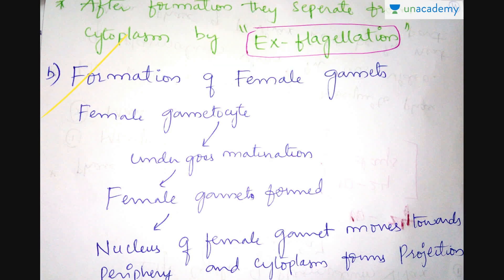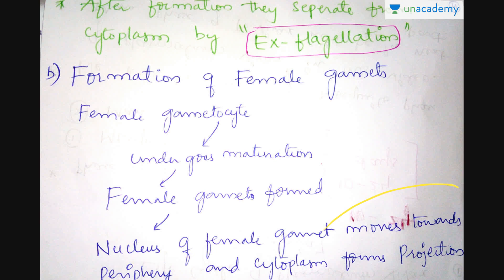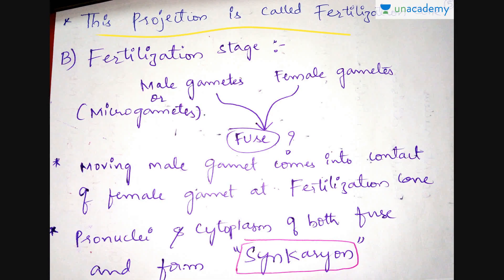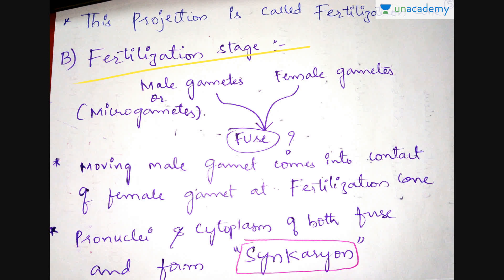The female gametocytes undergo development by a process called maturation, which leads to the formation of female gametes. The nucleus of the female gametes moves towards the periphery, similar to male gametes. This leads to the formation of a projection called the fertilization cone. Please remember that this projection is called the fertilization cone.